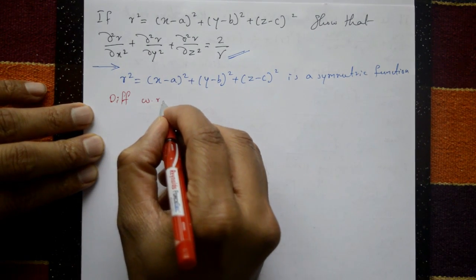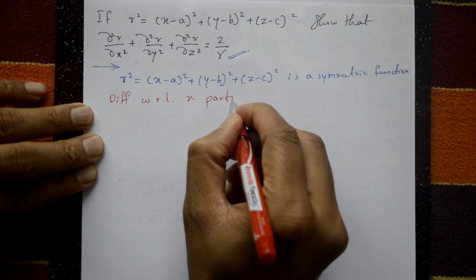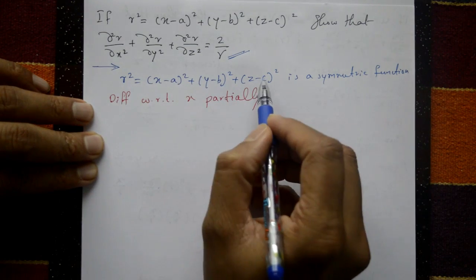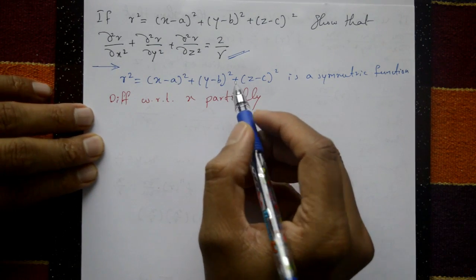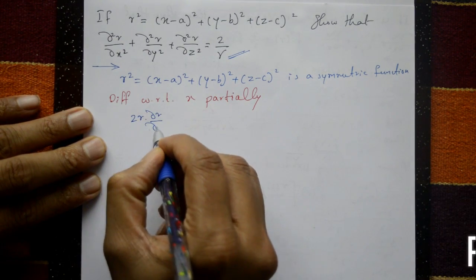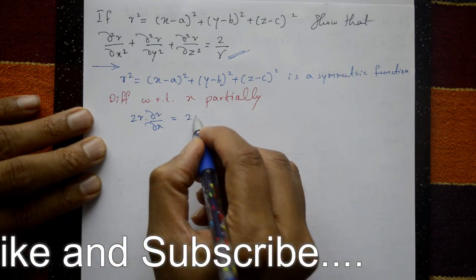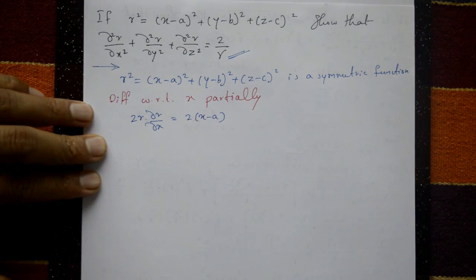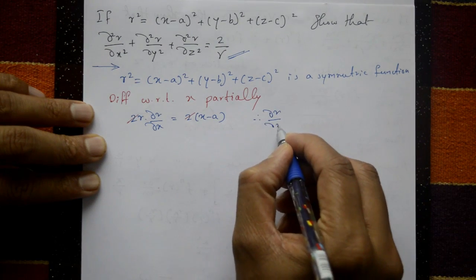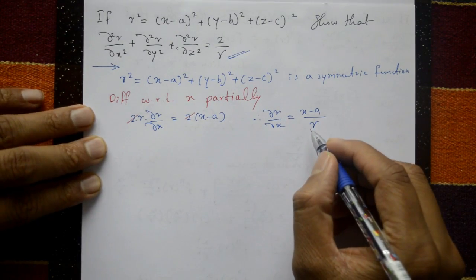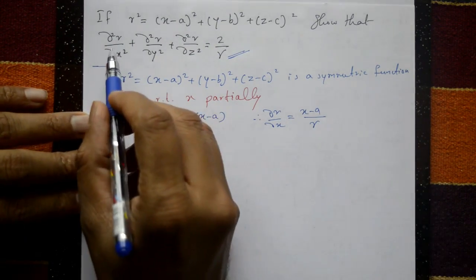Differentiating partially with respect to x — meaning y and z are treated as constants — we get 2r · ∂r/∂x = 2(x - a). The 2s cancel on both sides, so ∂r/∂x = (x - a)/r.